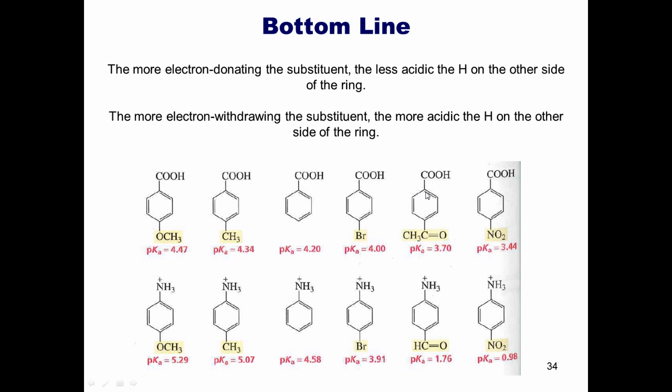Why? Because we now have partial positive charges being developed here, which weaken the bond between the oxygen and the hydrogen. Whereas in these donating groups, you've got partial negative charges being pushed here, which decreases the ability of the hydrogen to be deprotonated, because that would put a negative charge on the oxygen here.